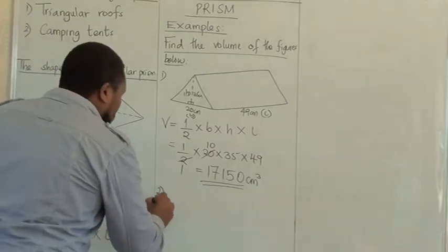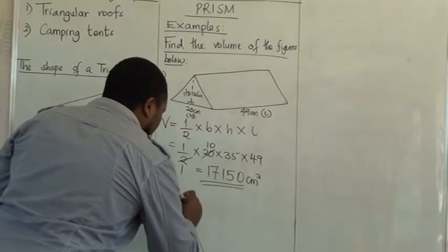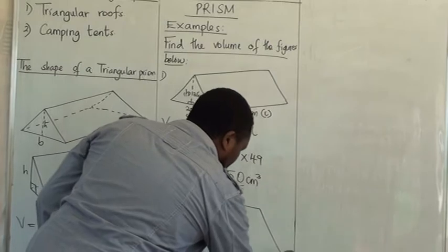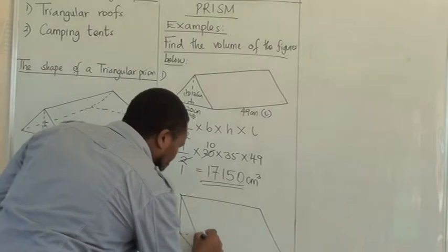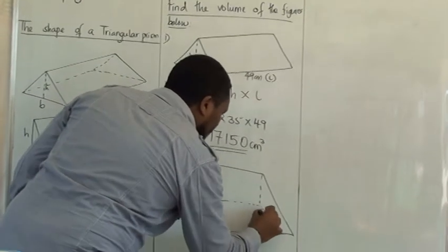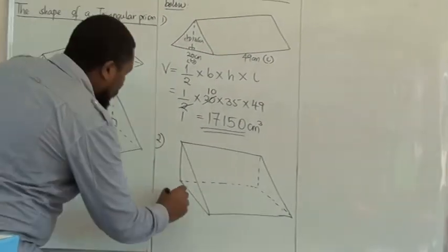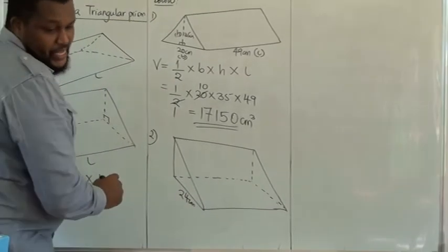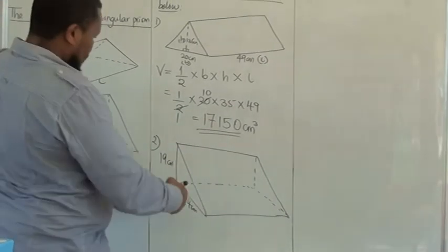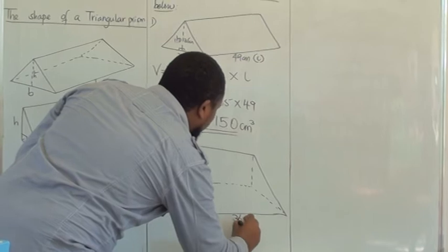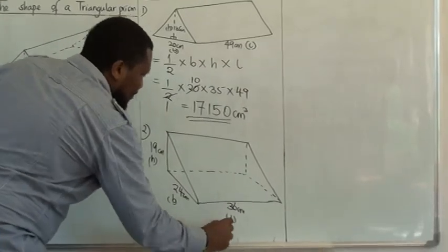Let's go to example number 2. We may draw this with a right angle triangle. I believe you also practice drawing these prisms. They are interesting to draw. So we shall have the base here as 24 centimeters, the height as 19 centimeters, and the length as 36 centimeters. It is good to label them as the height, the base, and the length.